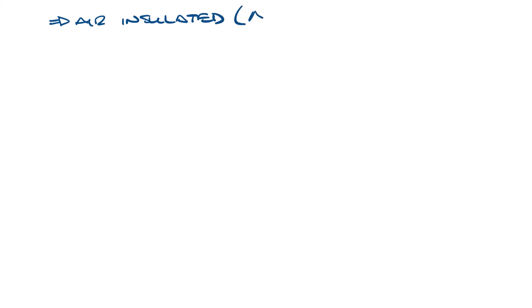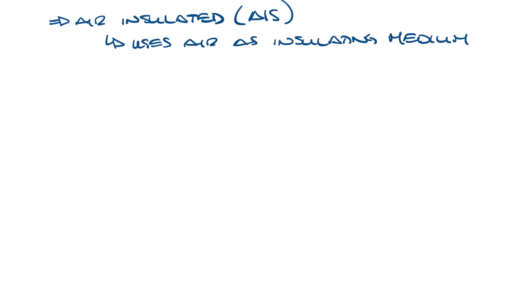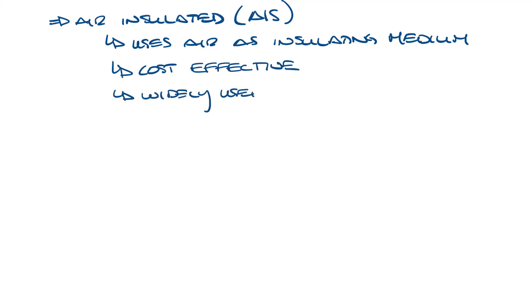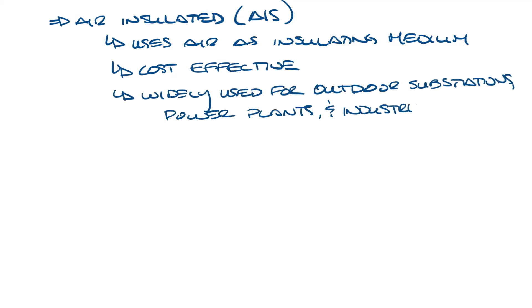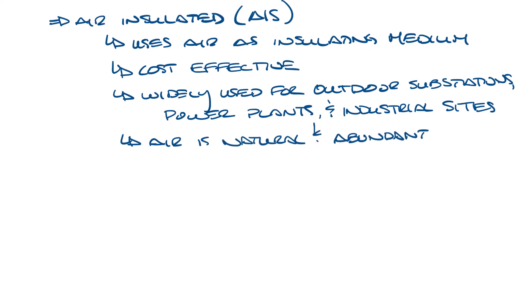Next you have air insulated switchgear, AIS. This uses air as the insulating medium, making it a cost-effective and widely used option for outdoor substations, power plants, and industrial sites. While it requires more space than GIS, it is easier to maintain. Air is a natural and abundant resource, and it significantly reduces the environmental impact.